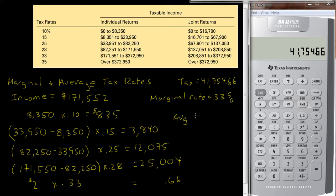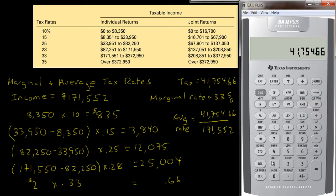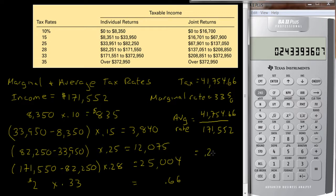Their average rate is going to be equal to the amount of tax they pay, $41,754.66, divided by their income, which is $171,552. So let me just divide this by $171,552, and I get $0.2434. So 24.34% is their average tax rate. Why? Because their lower income was taxed at lower rates.